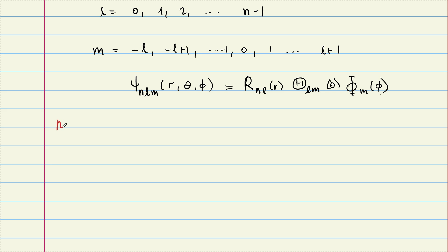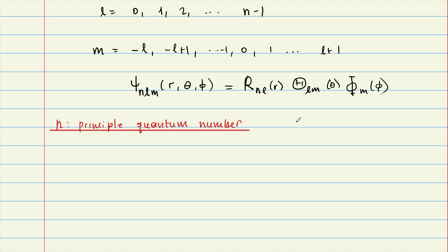The first one is n and we call this the principal quantum number. The principal quantum number n determines the energy, which is E1 divided by n squared.